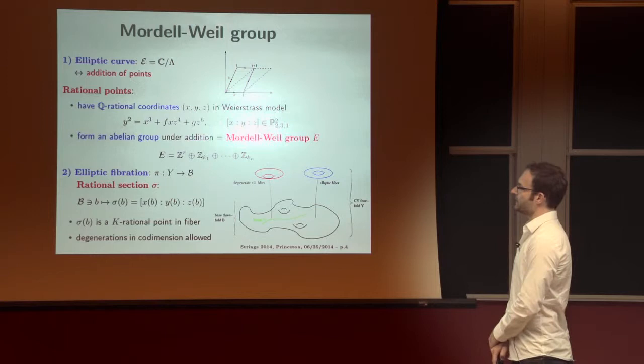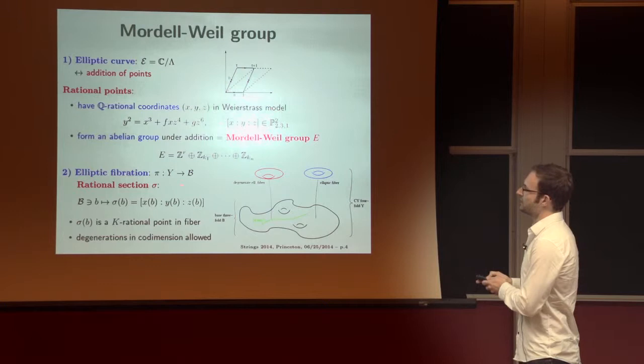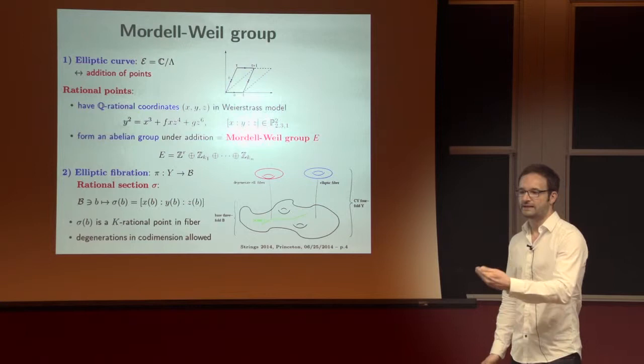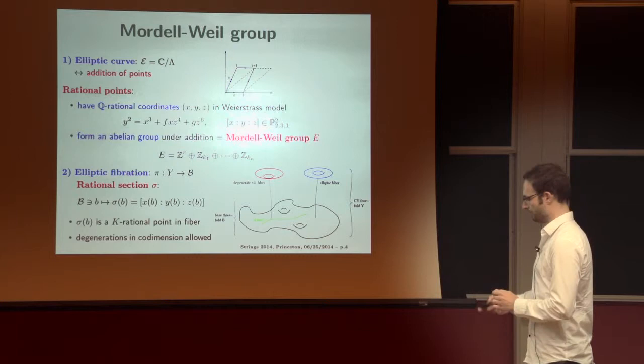When we promote the elliptic curve to an elliptic fibration to actually do F-theory, then the role of these rational points is taken by rational sections. These are maps that associate to each point of the base a rational point of the fiber, to the extent that these points can be understood as meromorphic functions of the base.